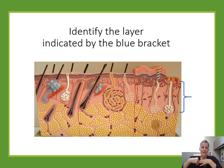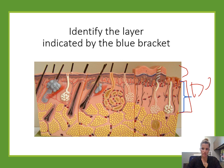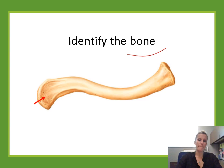Identify the layer indicated by the blue bracket. Looking at the skin, the top is the epidermis. This blue bracket is pointing to the dermis. Underneath that would be the hypodermis.